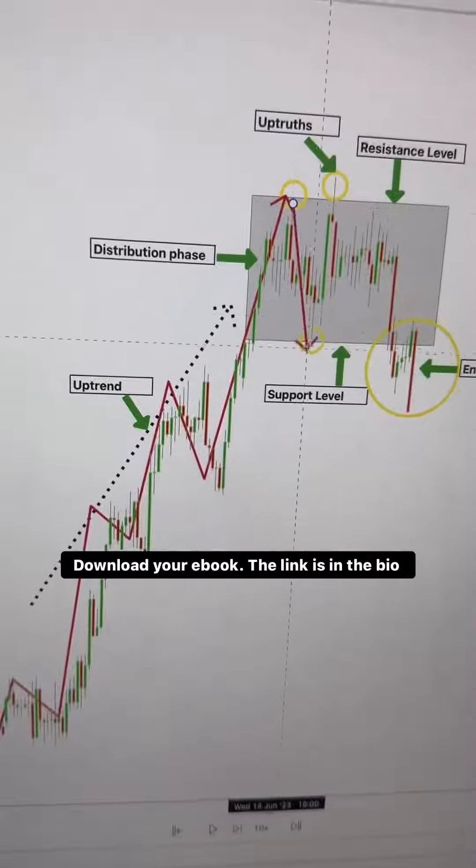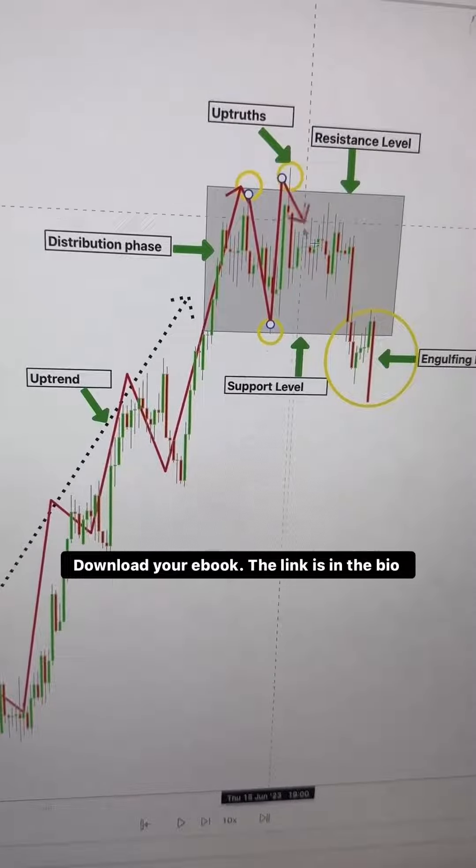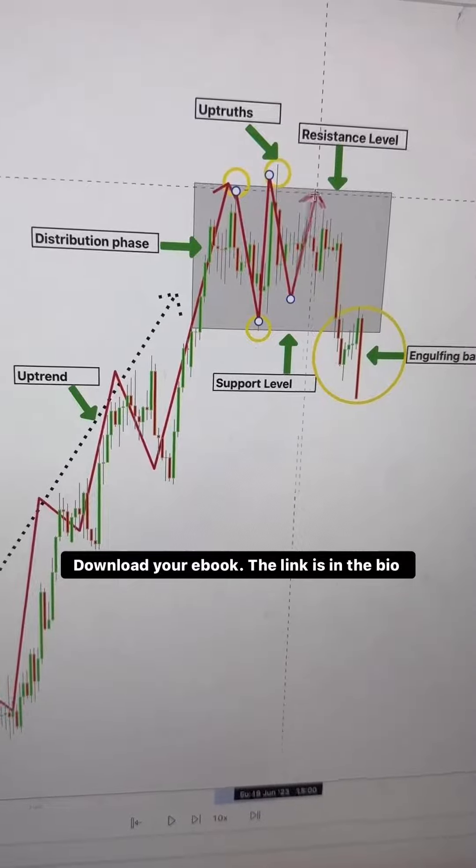The market entered a distribution phase. Why? Because buyers started taking profits and the market failed to make a higher high.